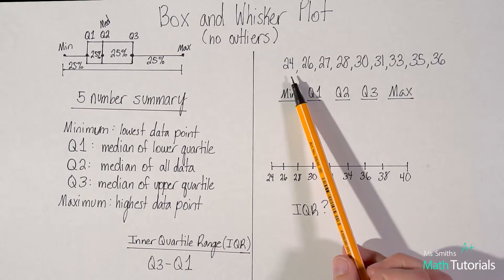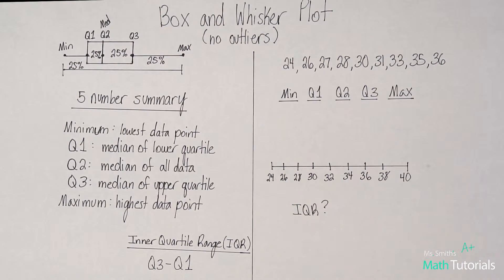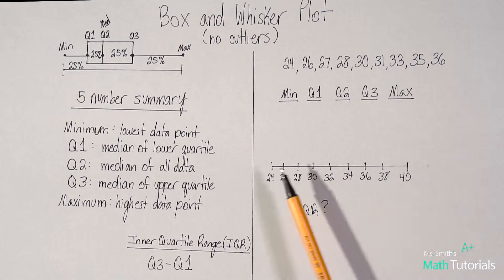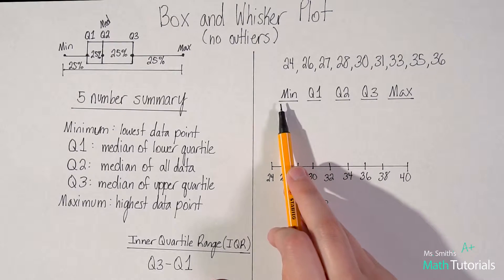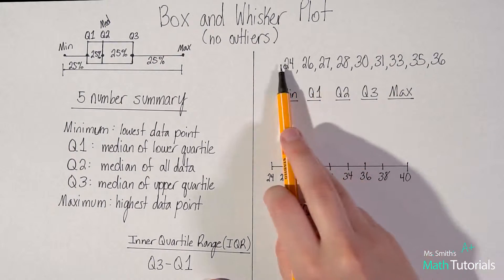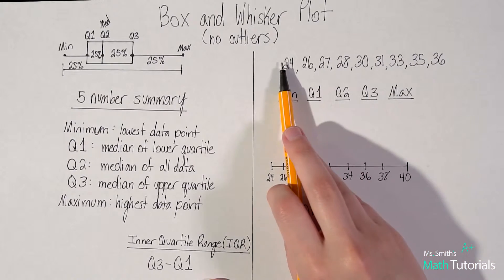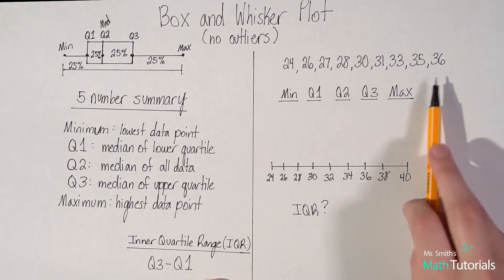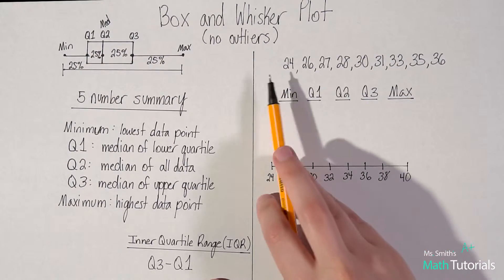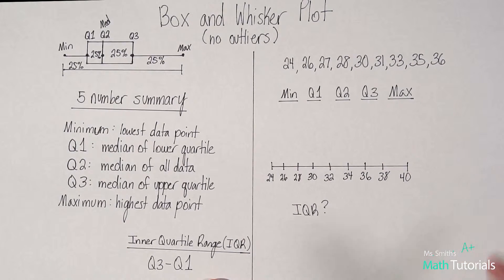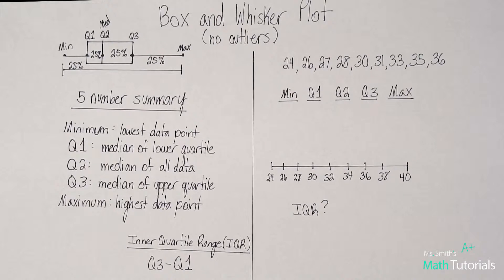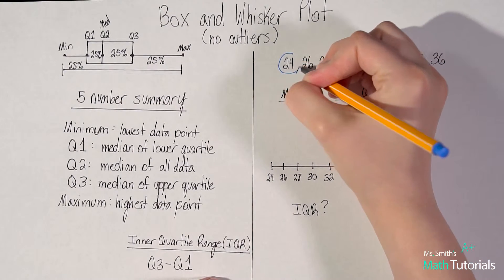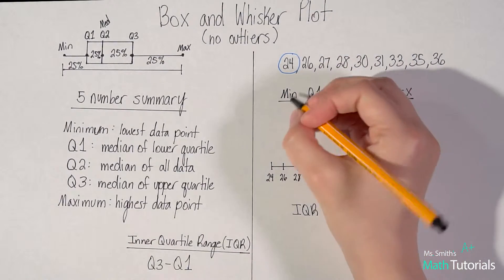So let's put this in action. I've been given a data set, and it wants me to find my five number summary and also plot a box and whiskers plot. The best place to start is your minimum. In order to find your minimum, you have to make sure your data set is in order — we talked about that in the last video. If it's out of order, you've got to put it in order. My minimum value is my lowest data point, so in this case it would be 24. I like to circle it, so my minimum value is 24.